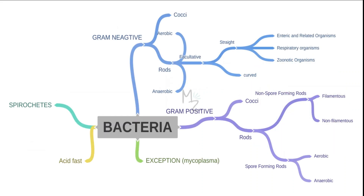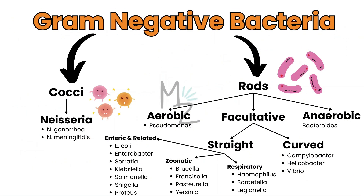Before talking about Vibrio cholerae in detail, let us talk about the classification of bacteria. Bacteria are classified into spirochetes and acid-fast bacteria based on acid-fast staining, with mycoplasma as an exception. Bacteria are also subdivided based on gram staining into gram-positive and gram-negative. Gram-negative bacteria are further subclassified into cocci — including Neisseria gonorrhoeae and Neisseria meningitidis — and rods, which are subdivided into aerobic, like Pseudomonas, anaerobic, like Bacteroides, and facultative.